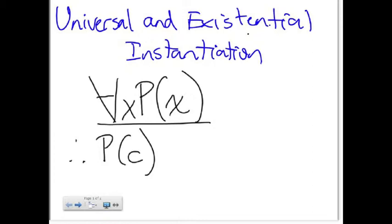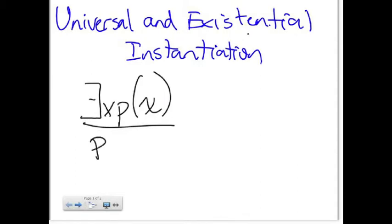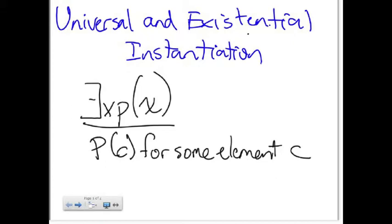For existential instantiation, this premise presupposes that a class has members even when we are not explicitly told so. It allows us to conclude that there is an element C in the domain for which P of C is true if we know that for every value of X the function P of X is true. We cannot select an arbitrary value of C here, but rather it must be a C for which P of C is true is known. Most of the time, however, we have no prior knowledge of what C is, only that it exists.